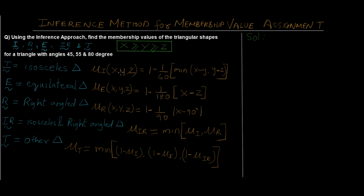For the isosceles triangle we have μ_I(x, y, z), where x, y, and z are the angles given in the question. Remember that x is always greater than or equal to y, which is always greater than or equal to z. In order to apply the formulas written in orange, we have to follow this simple rule — always take the greatest angle as x, the second greatest as y, and the third as z. These can also be labelled a, b, c or any other notation, but the x ≥ y ≥ z rule must be followed. Let's now directly apply these formulas and find the membership values for each triangle.